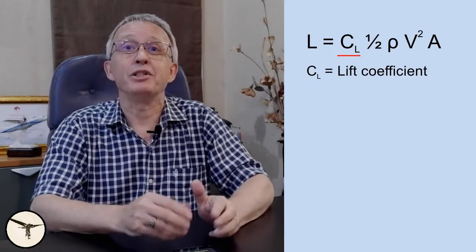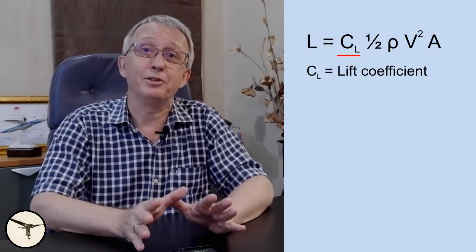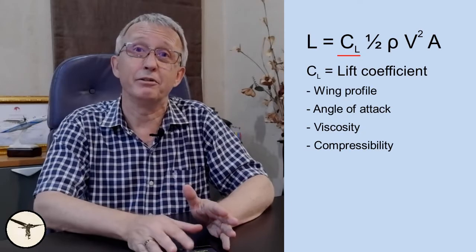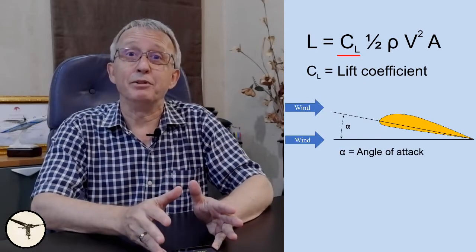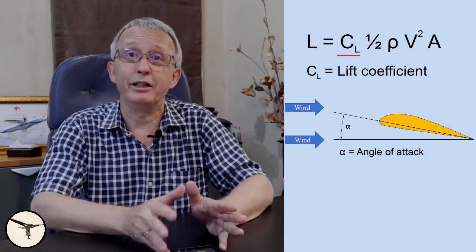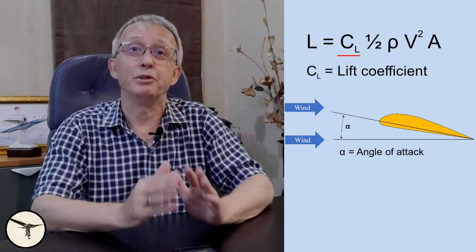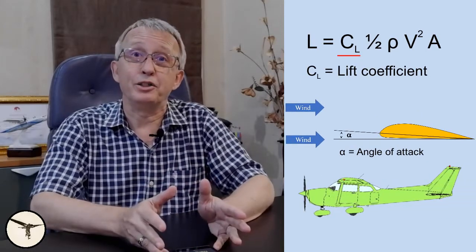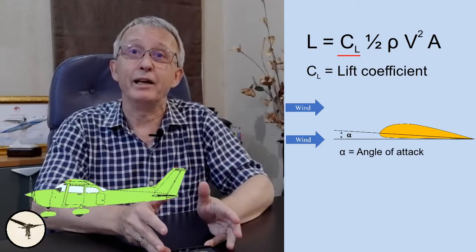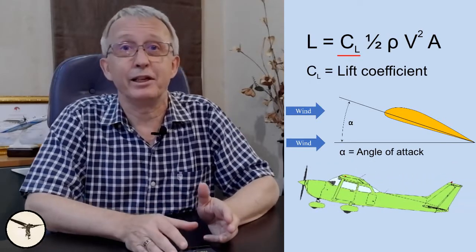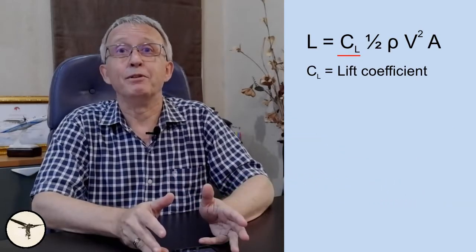The lift coefficient is a dimensionless number. In normal flight at cruise, the lift coefficient is positive and normally less than 1. It depends on several factors; the most important are the shape of the wing profile and the angle of attack. Engineers also include viscosity and compressibility in the calculations. The angle of attack is the angle between the airflow and the chord line, which is a straight line between the leading edge and the trailing edge of the wing. A high angle of attack gives a high lift coefficient and vice versa. When an airplane is flying at high speed, it needs a small lift coefficient, so the angle of attack is small. When flying at low speed, it needs a high lift coefficient, so the angle of attack is high.